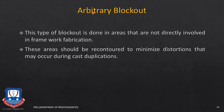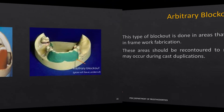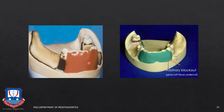The third type of block out is called an arbitrary block out. This type of block out is done in areas which are not involved in the RPD framework. This is for the ease of removal of the master cast after duplication so that there should not be any distortion. Usually undercuts below the teeth and the undercuts in the vestibules are blocked out so that after duplication the cast can be easily pulled out of the mold without causing any distortion. The area beneath the incisal third, the vestibule, hard tissue undercuts, and any undercuts in the distal lingual area are blocked out since they are tapered and create a concave profile.